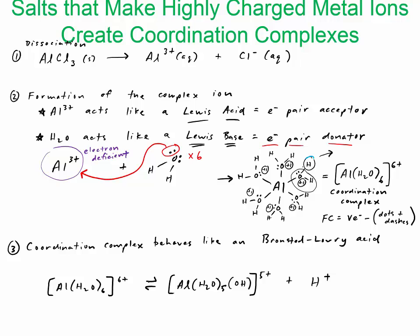If this H breaks off now, you just have OH attached and then the oxygen is following the octet rule, so there's no formal charge now on that oxygen. So the charge becomes a 5+ and you get a proton. We'll make a note of that. So this right here can now dissociate.